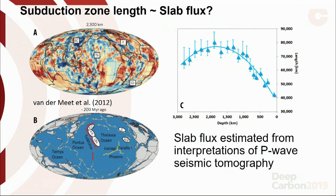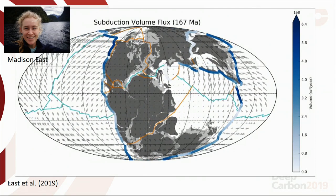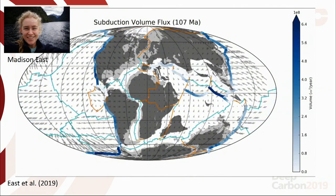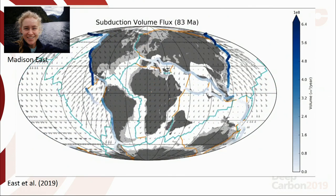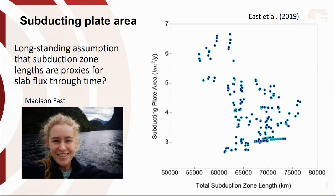Other people have done similar things, using seismic tomography sections, linking subduction zone lengths and arc lengths to slab flux as a proxy for how much material you're bringing into the mantle. We took this a step further with talented student Madison East by actually looking at the convergence rate across the subduction zone. Darker blue means more material being subducted through time. What's surprising is that the subduction zone length did not really correlate to the subducting plate area — the amount of stuff you're putting into the mantle. In fact, it seems to have a weak negative correlation, so subduction zone lengths aren't an entirely reliable proxy for slab flux.